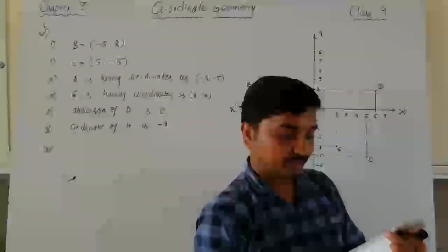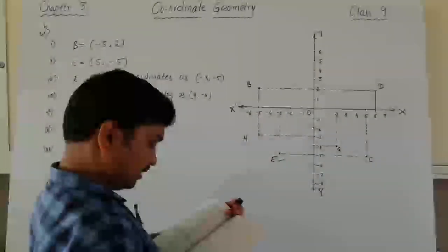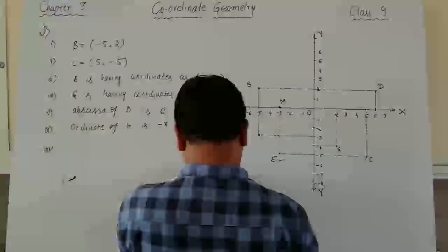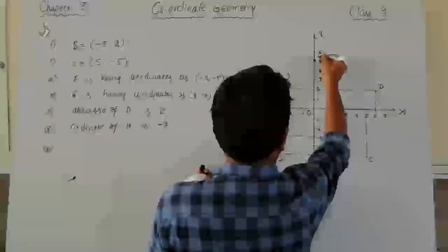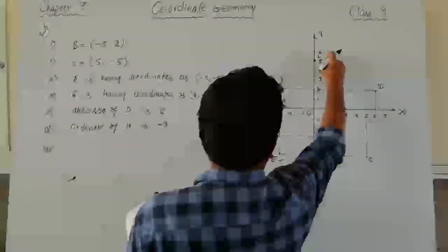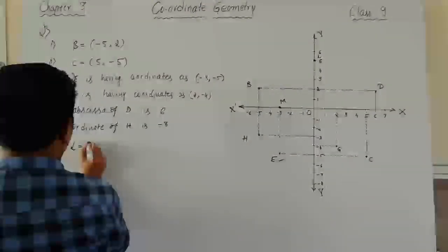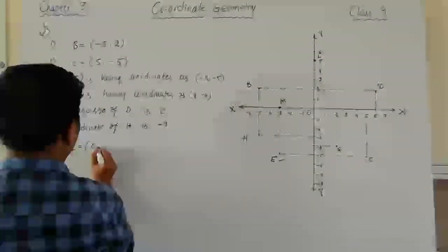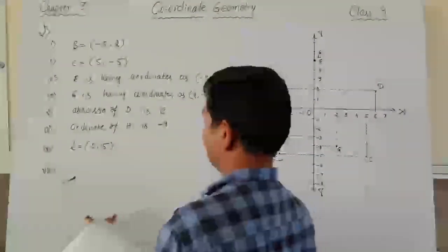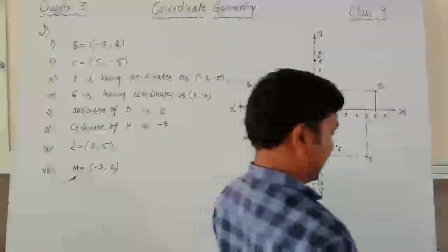The seventh part asks for the coordinates of point L. Points M and L are present on the axes, so one coordinate will definitely be zero. Point L lies on the y-axis and is located at plus 5, so its coordinates are 0 comma 5. For the eighth part, point M lies on the x-axis and is located at minus 3, so its coordinates are minus 3 comma 0.